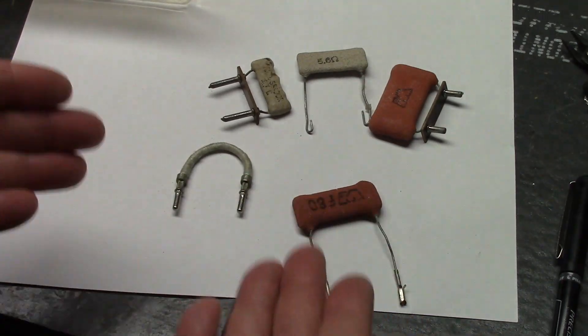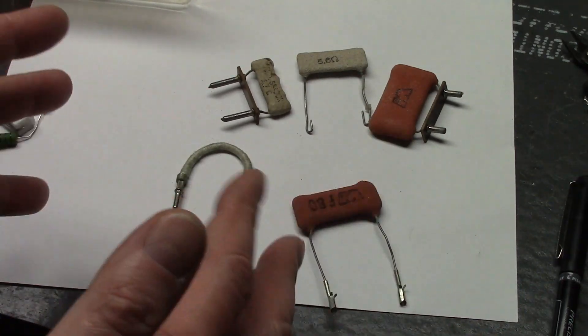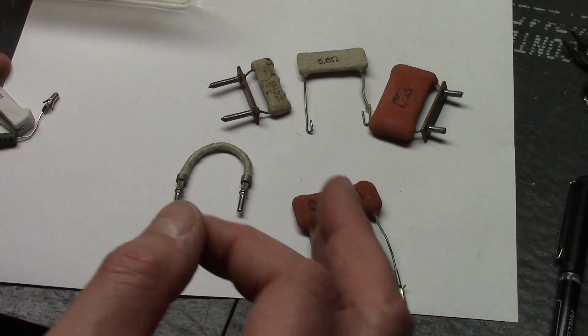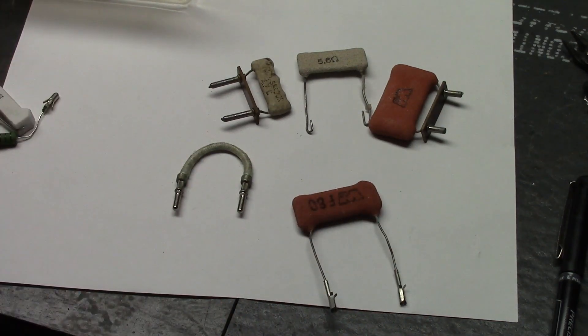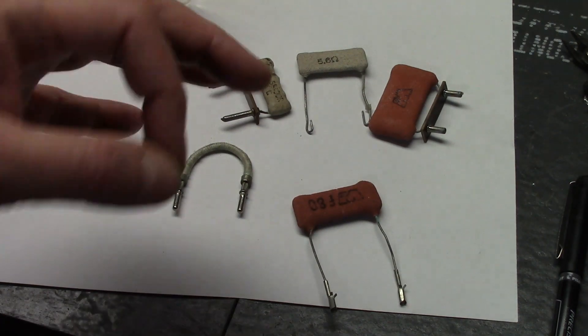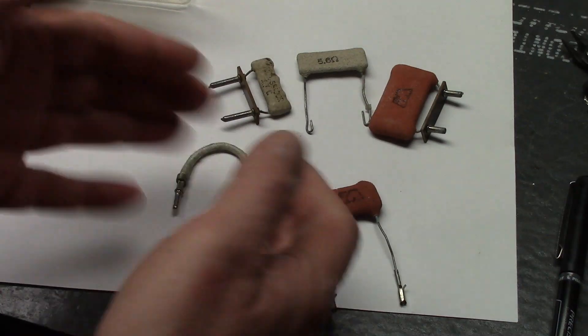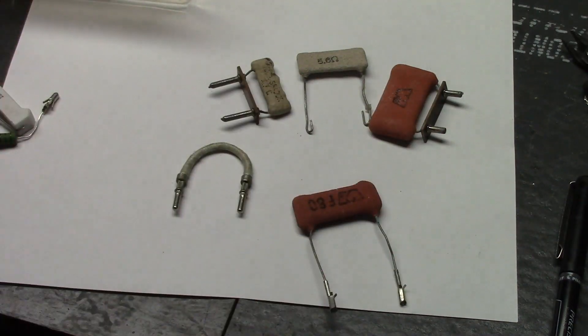These serve two purposes: to limit surge current when a set is turned on to protect solid state rectifiers - be they selenium, germanium, or silicon. And if there's a short in B+, say a filter cap shorts out, these will burn open and protect your power transformer.